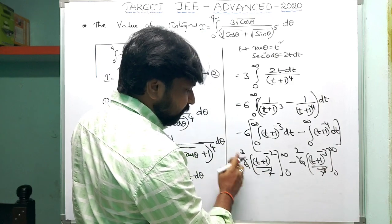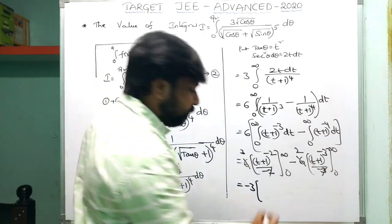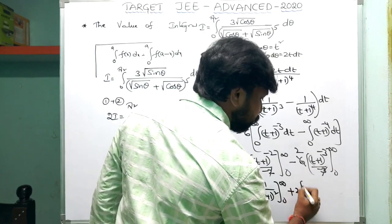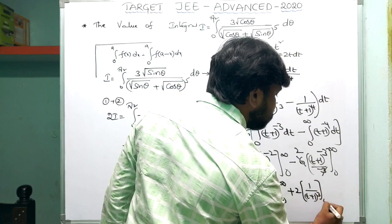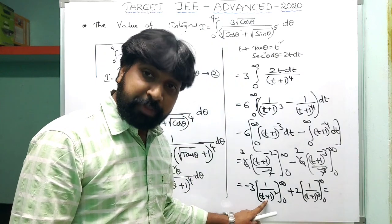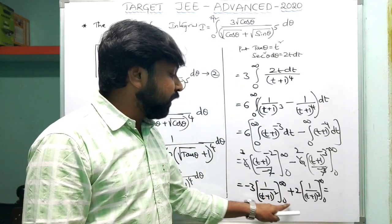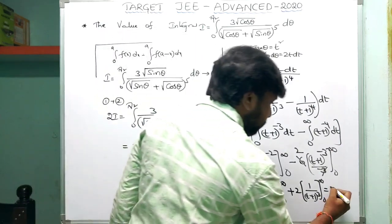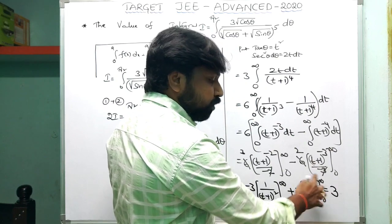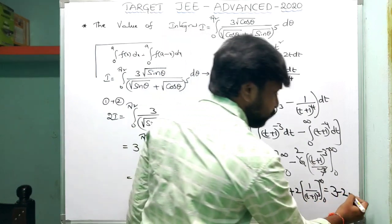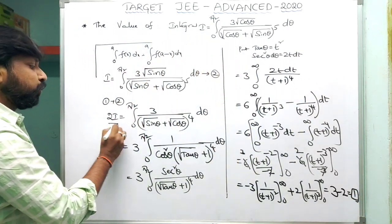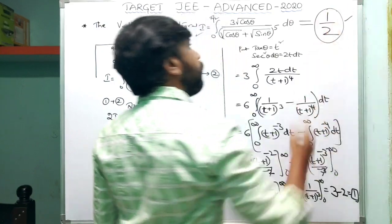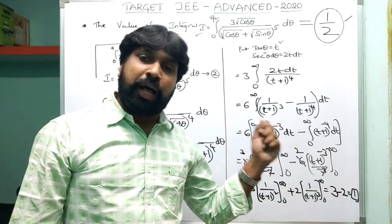Evaluating: −3 × [1/(t+1)²] from 0 to ∞ plus 2 × [1/(t+1)³] from 0 to ∞. At ∞ both terms are 0; at 0 both give 1. So: −3×(0−1) + 2×(0−1) = 3 − 2 = 1. Therefore 2I = 1, which means I = 1/2. So 1/2 is the answer for question one.